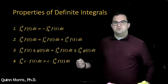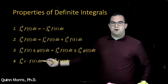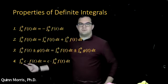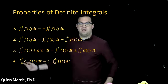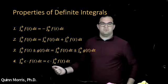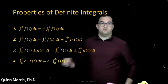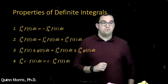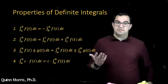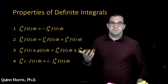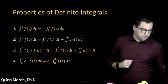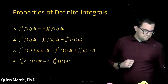Finally, the last property says if I have the integral of c times f, I can pull that constant c outside the integral. These are all helpful properties — hopefully things you've seen before — and we'll be using them quite a bit throughout this course.